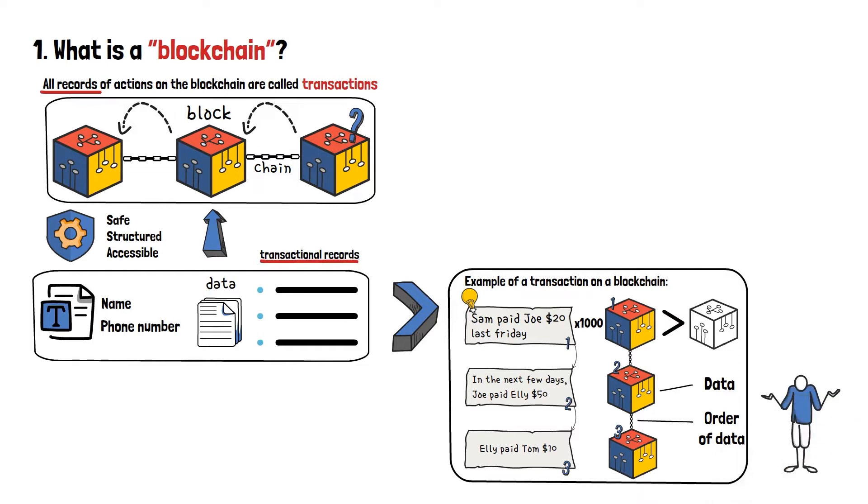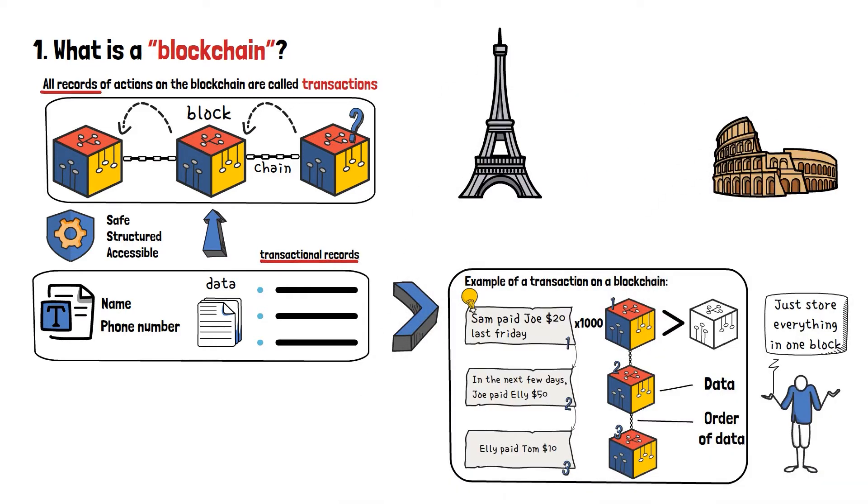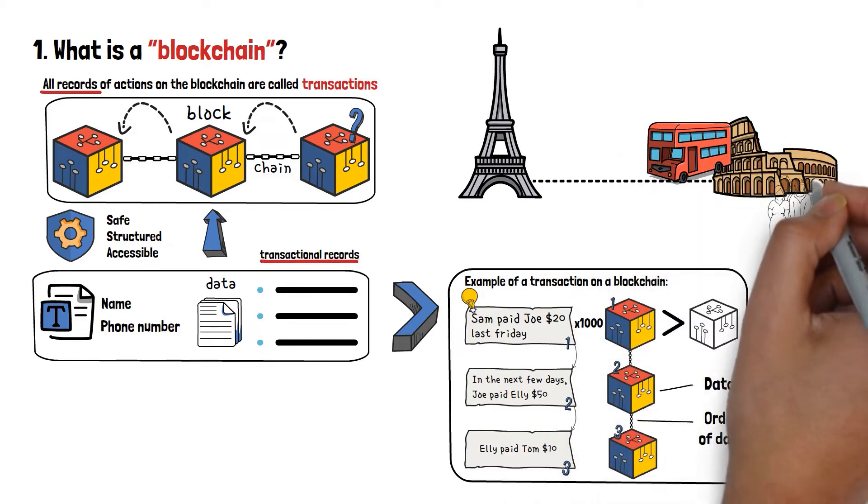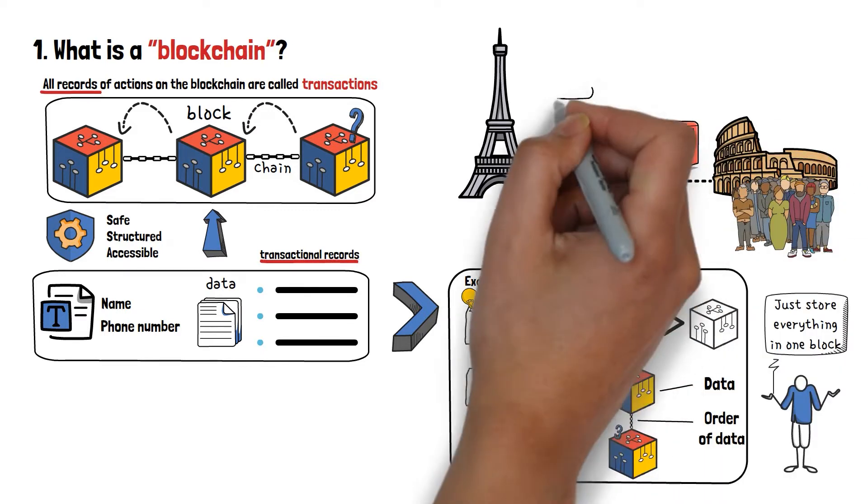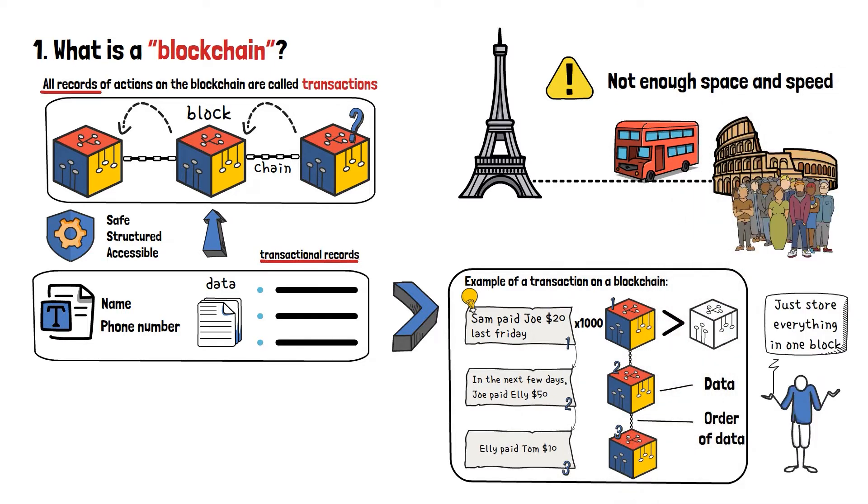Now, I can hear you asking, why can't we just create a single block and store all of the information on it? Well, for the same reason, we can't take a single bus to drive all of the people from one city to another. It doesn't have enough space and speed to drive them all at once.